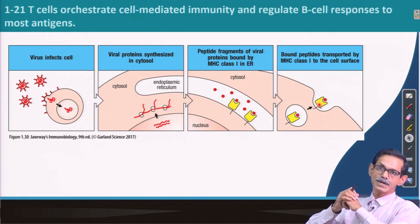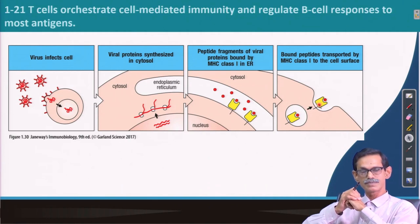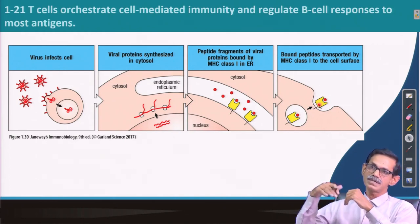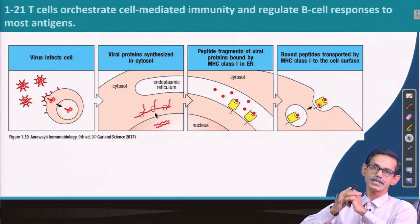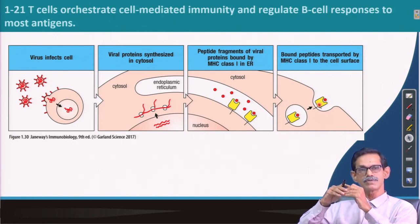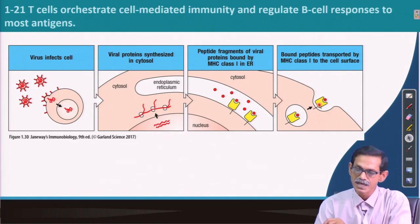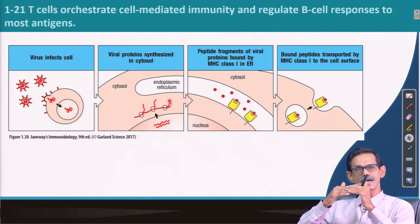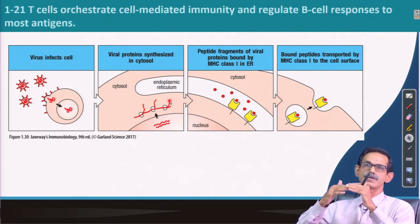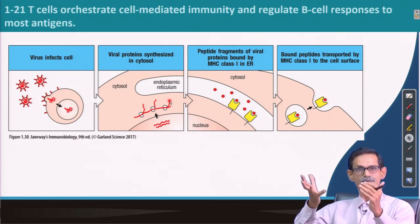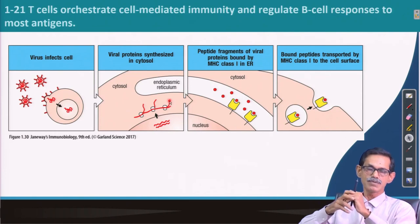What happens to normal proteins? Every protein has a turnover number — one protein may function 100 times, another 200 times, then it is degraded. If the cell needs it again it will make more; otherwise it stops production. During ribosome-based protein synthesis, many things can go wrong: some proteins may be incomplete, some may not fold properly. These are called defective ribosomal products (DRIPs) — non-functional peptides.